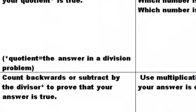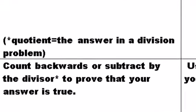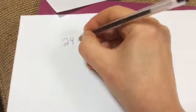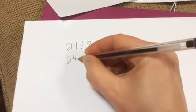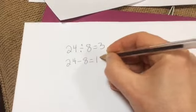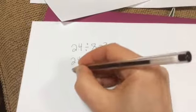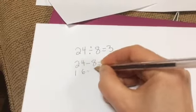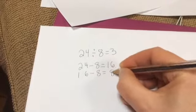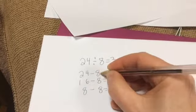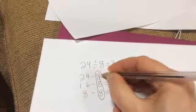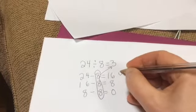Our next question is count backwards or subtract by the divisor to prove that your answer is true. This one was a little tricky, but it's easy once you get the hang of it. 24 divided by 8 equals 3. 24 minus 8 equals 16, and we're just going to keep subtracting until we get to 0. 16 minus 8 equals 8, and 8 minus 8 equals 0. I've got 1, 2, 3 eights. And there it is, the answer, 3.